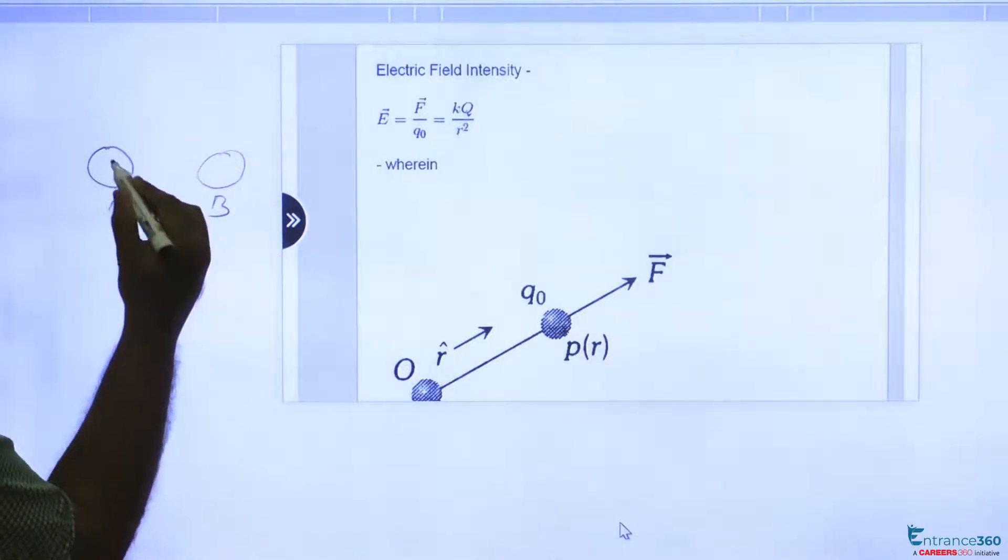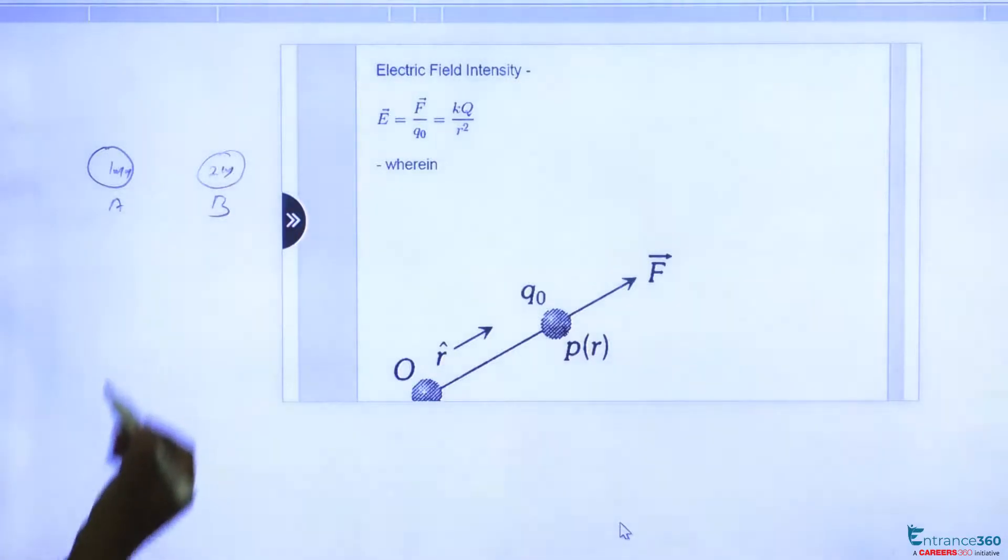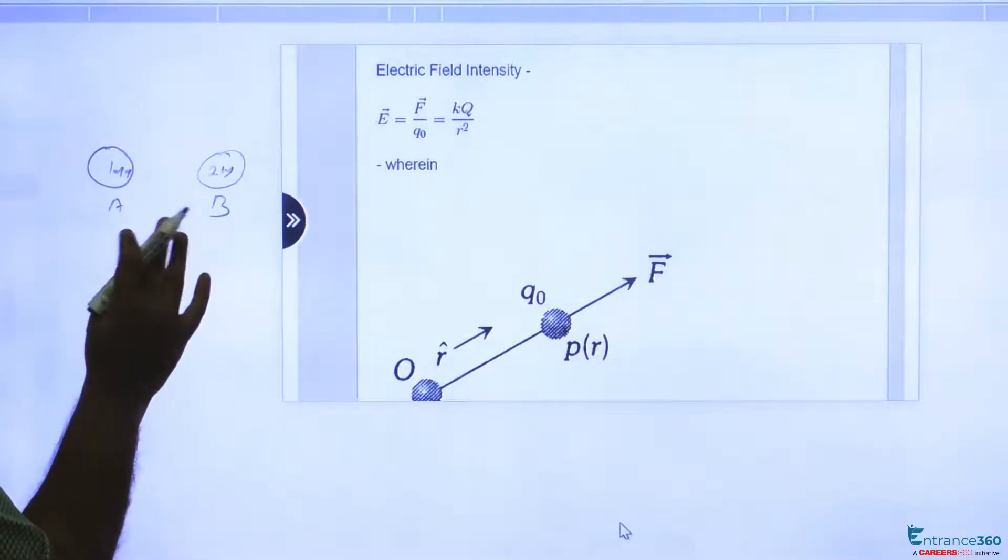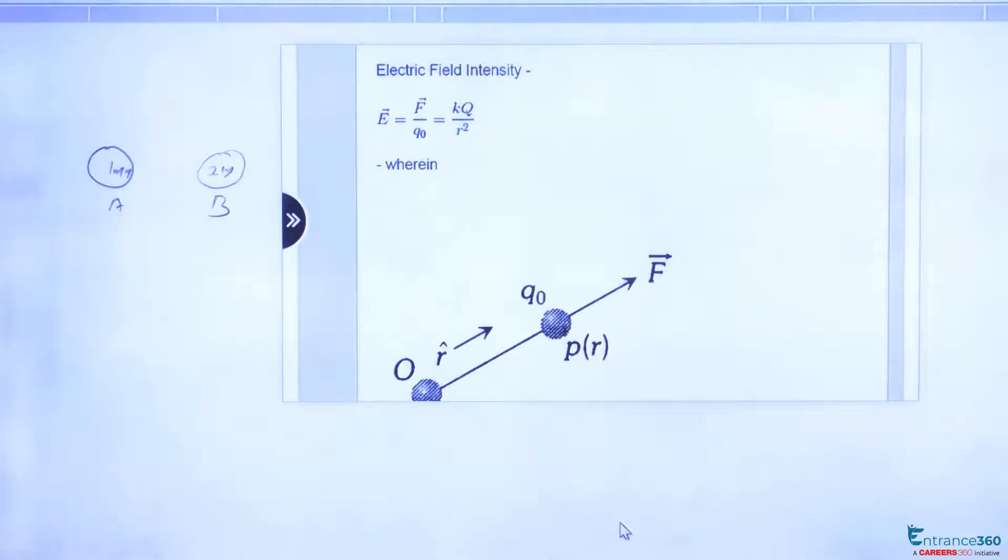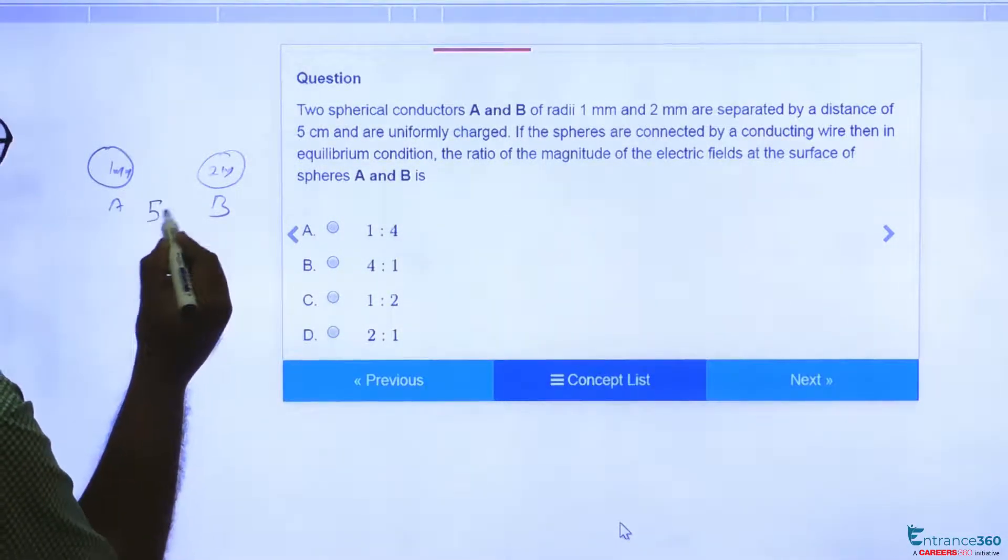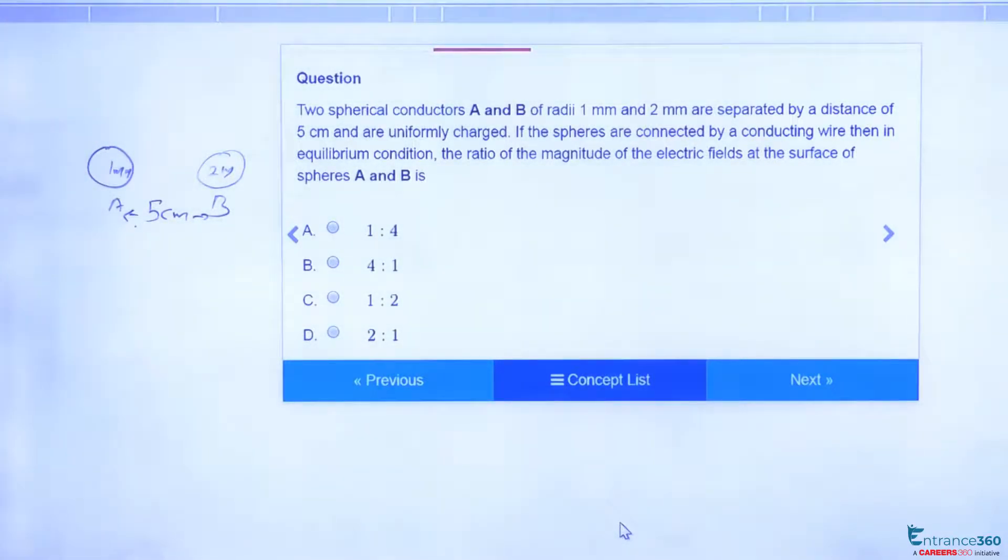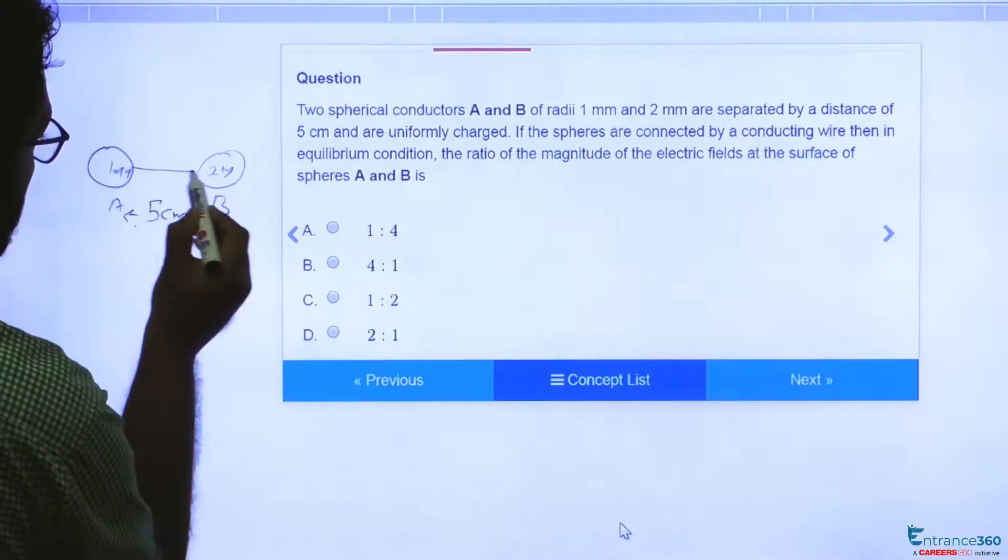and B of 1 mm radius and 2 mm radius which are separated by a distance of 5 centimeter. We have to find ratio of magnitude of electric field and these are connected by a conducting wire.